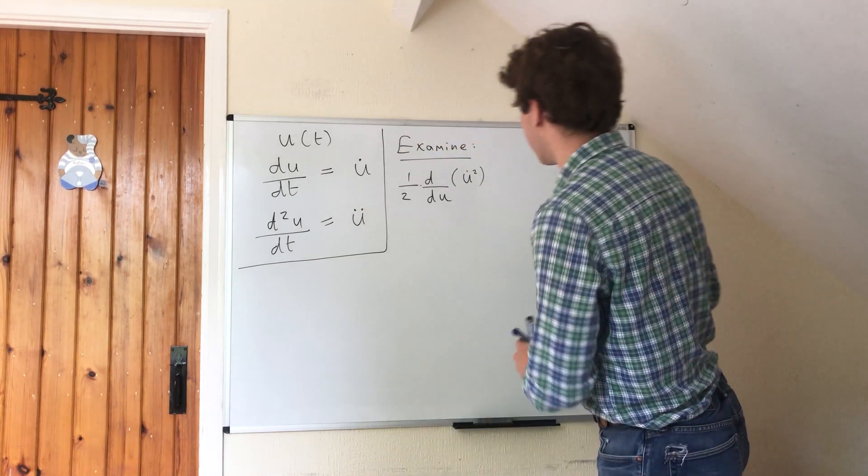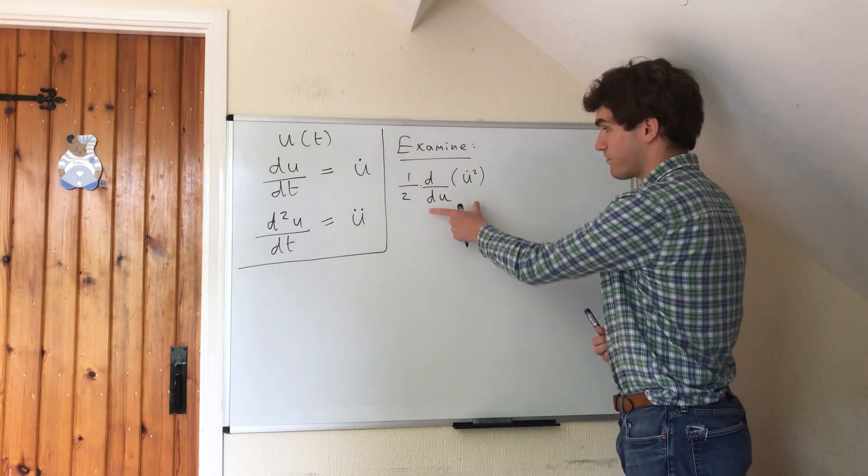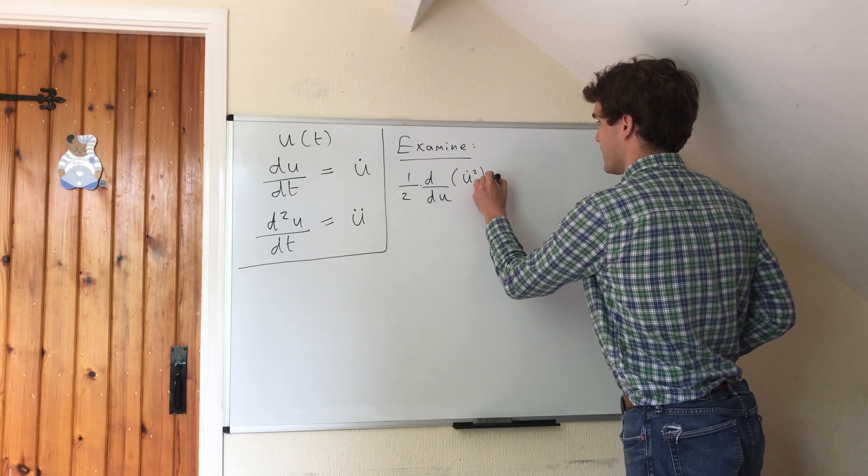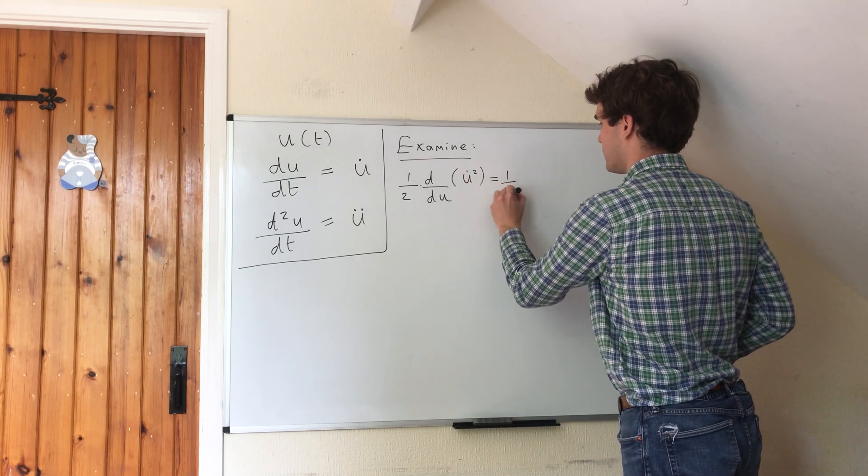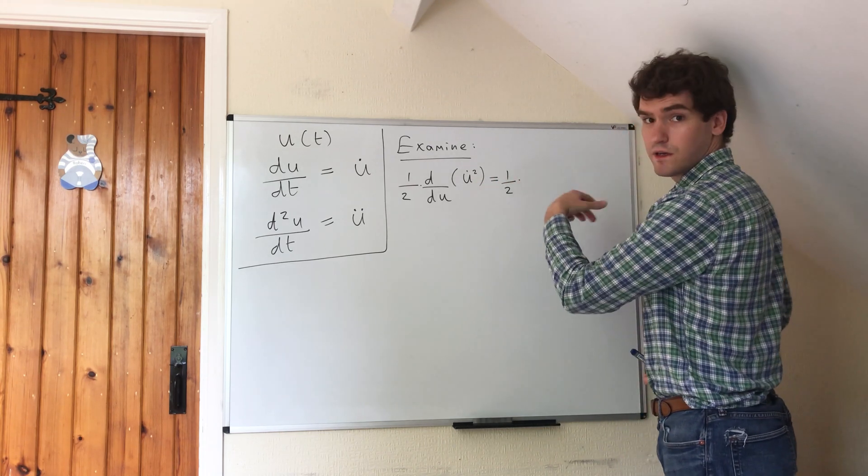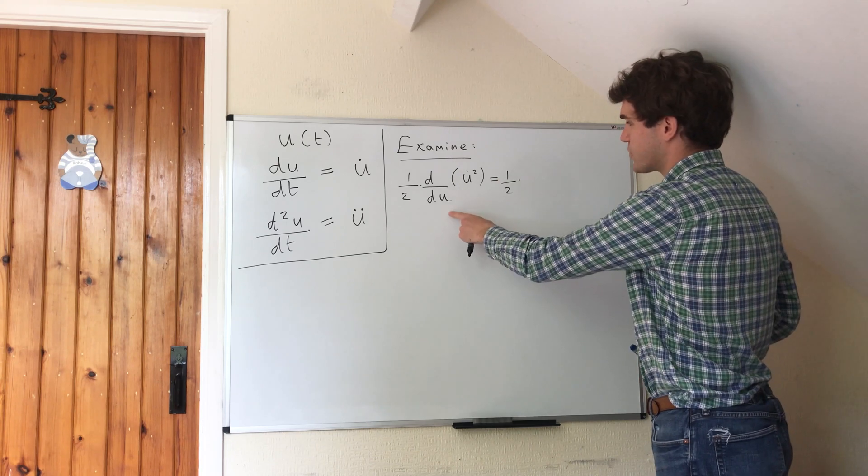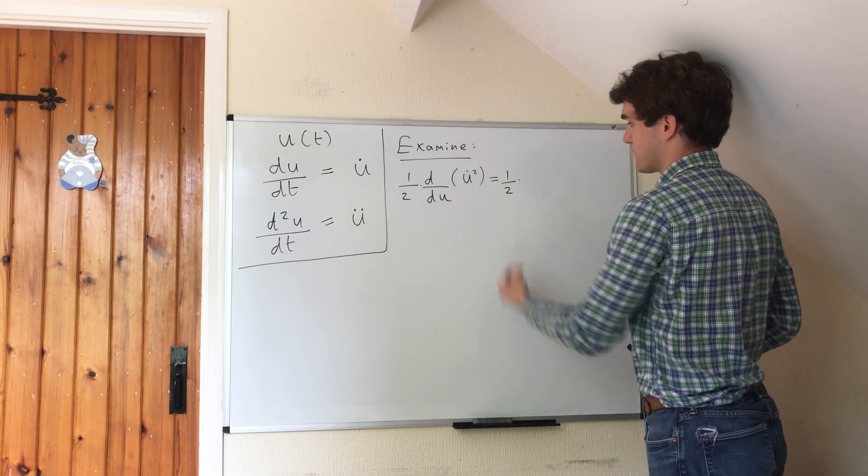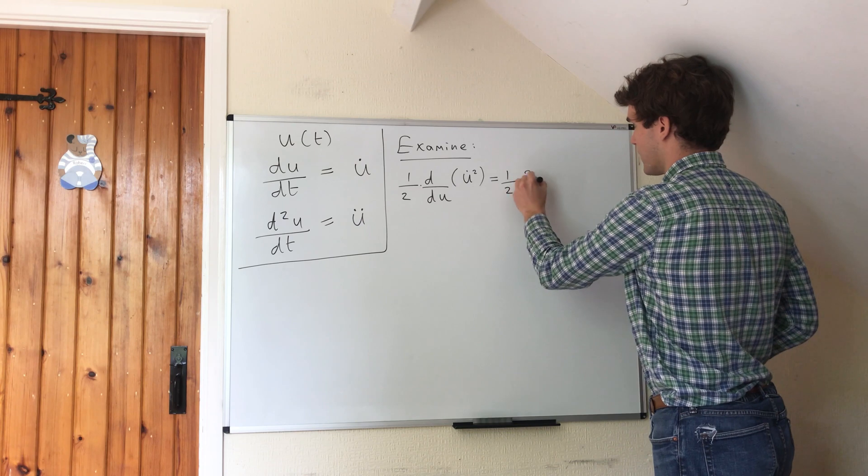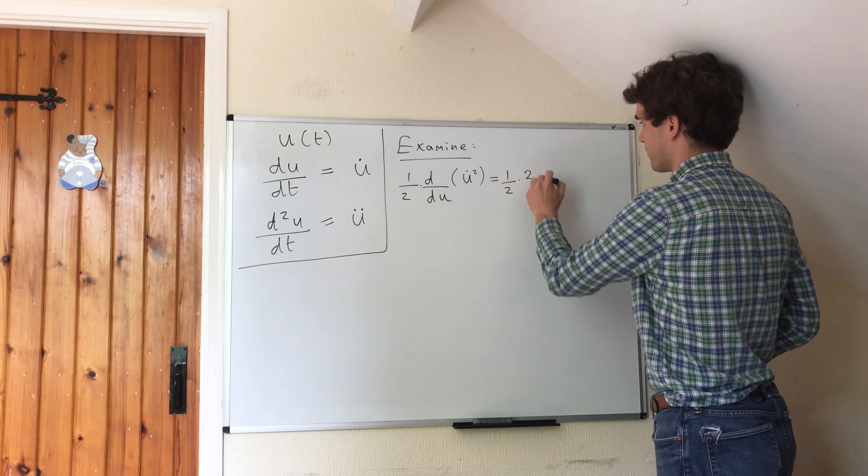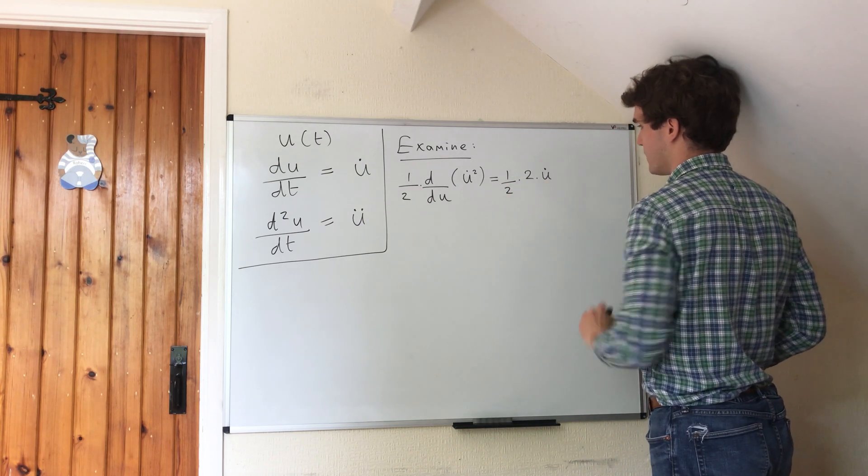So what are we going to do with this? We need to differentiate this and use the chain rule. We have a half multiplied by... whenever we differentiate something with respect to something squared, we bring down the thing on the top and we minus one from the power. So we have u dot then on its own.